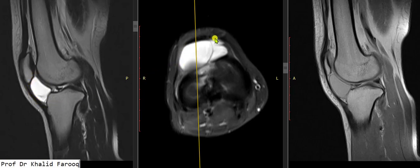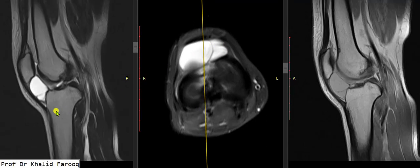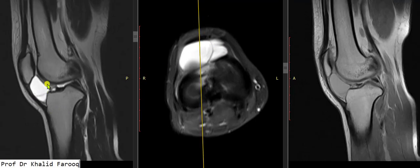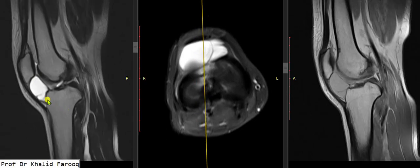This is the area of the infrapatellar Hoffa's fat pad, and this area contains a cystic lesion which is well-defined and contains multiple septa within it. We can see the septa in this cyst, which is located at the infrapatellar Hoffa's fat pad. This is a very rare case of a ganglion cyst of the infrapatellar Hoffa's fat pad.